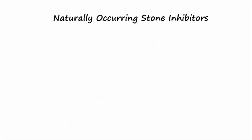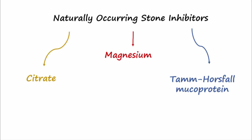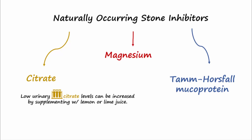Three naturally occurring stone inhibitors — citrate, magnesium, and Tamm-Horsfall mucoprotein — help prevent stone-forming substances from coming together. Low urinary citrate levels may be increased by supplementing with lemon or lime juice. This will increase urinary citrate levels without increasing oxalate levels.